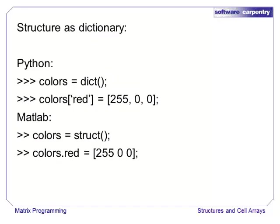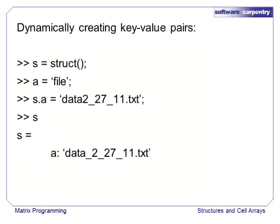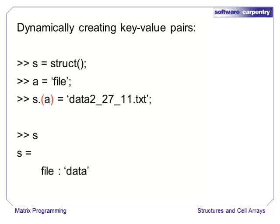As this example shows, care must be taken when creating key-value pairs dynamically. Here, we assign the key file to the variable A and we assign S.A to the file name data2_27_11.txt. Instead of creating a field in the structure named file, the file name is assigned to the field A. In order to use the contents of a variable as a key in a structure, we have to surround it with parentheses, which tells MATLAB to use the value of the variable rather than the literal string that we typed in.